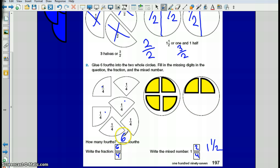Or I would have how many fourths total? One, two, three, four, five, six. And that's where the six fourths come in.